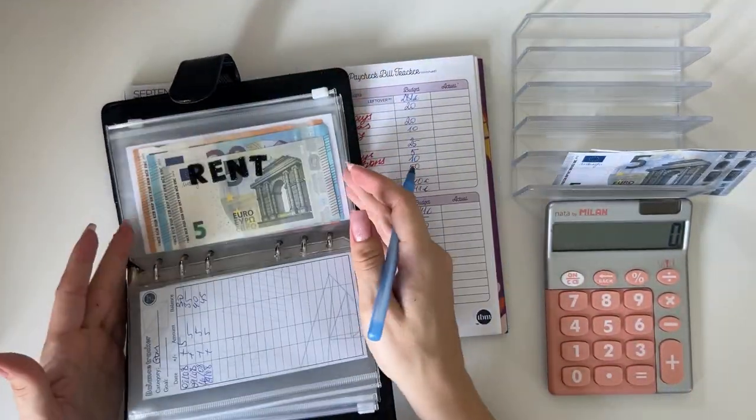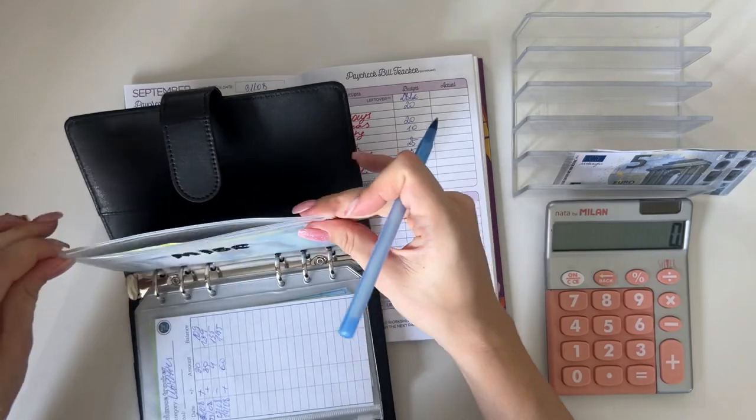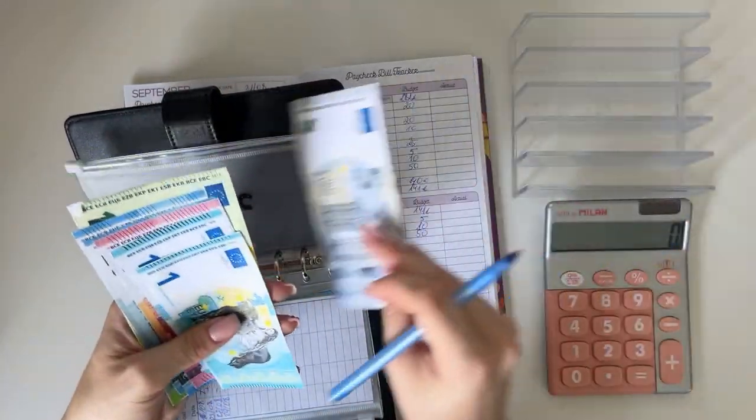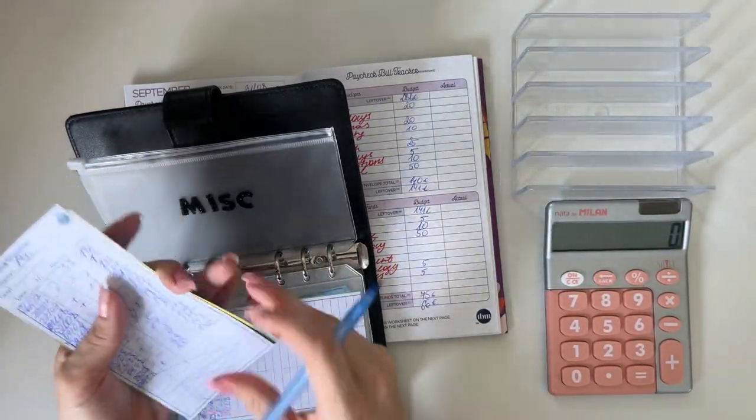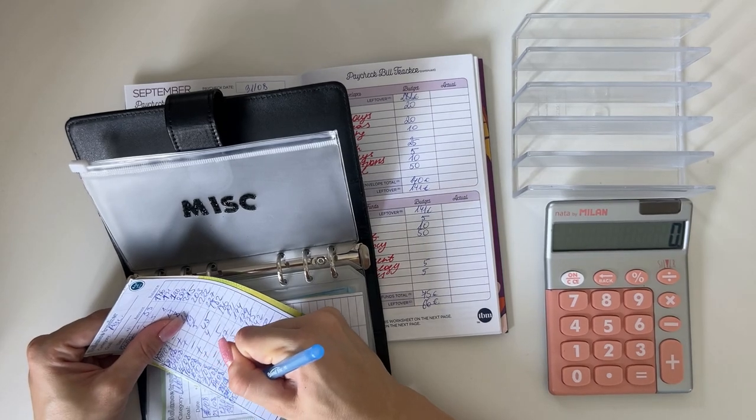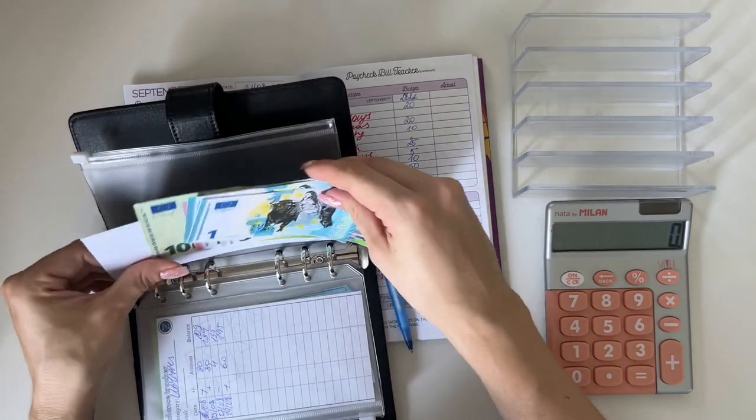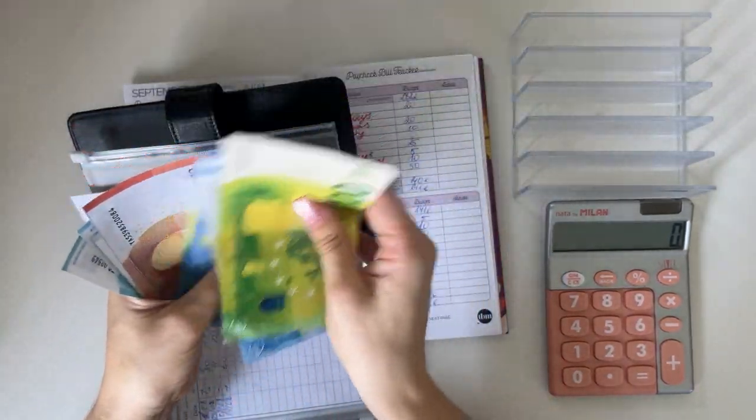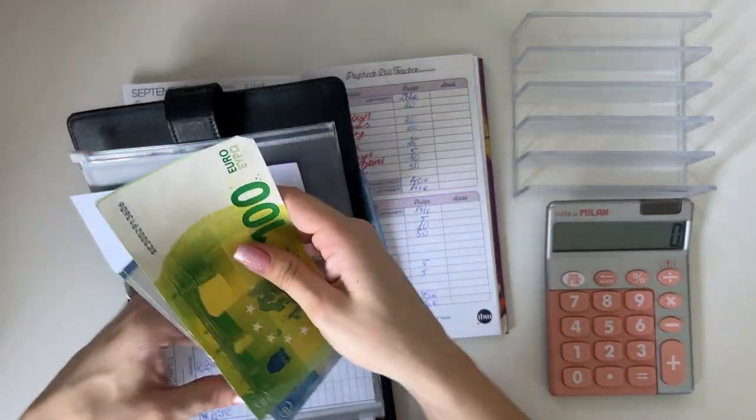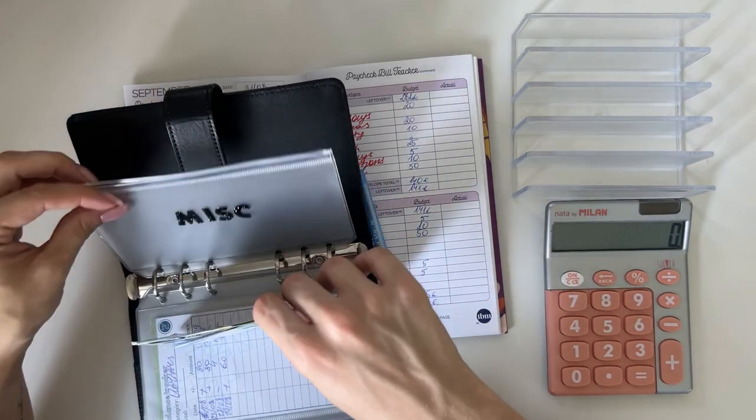So miscellaneous, we have adding 10. We should have 162 but let's count. 120, 40, 50, 55, 61 and 2. Indeed, so that's correct.